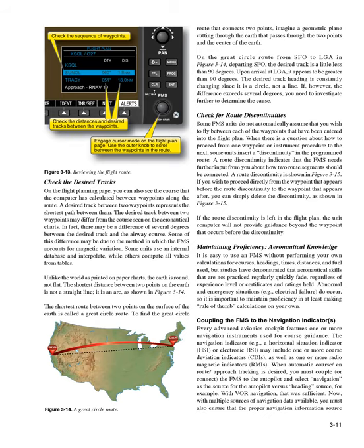The shortest route between two points on the surface of the Earth is called a Great Circle route. To find the Great Circle route that connects two points, imagine a geometric plane cutting through the Earth that passes through the two points and the center of the Earth. On the Great Circle route from SFO to LGA in Figure 3-14, departing SFO the desired track is a little less than 90 degrees. Upon arrival at LGA it appears to be greater than 90 degrees. The desired track heading is constantly changing since it is a circle, not a line. If the difference exceeds several degrees, you need to investigate further to determine the cause.